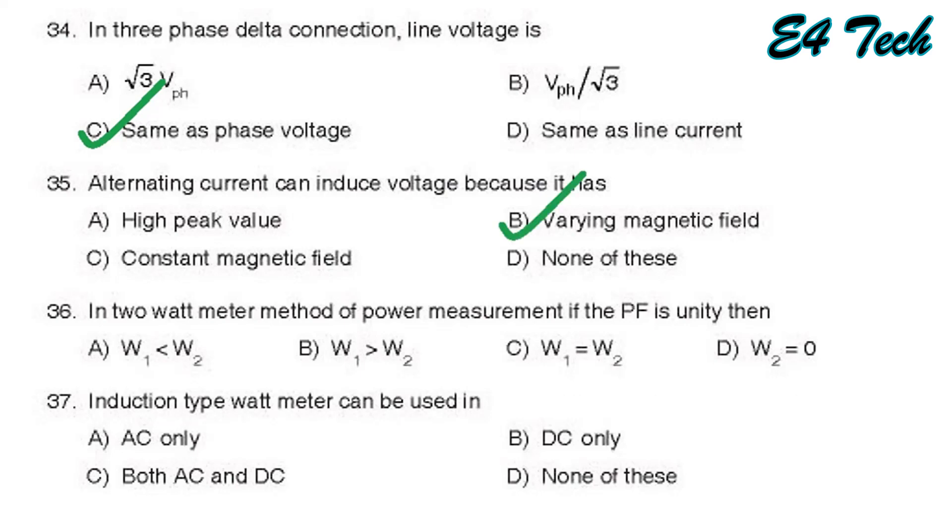In two wattmeter method of power measurement, if power factor is unity, then both wattmeters indicate same reading. That is W1 is equal to W2, option C.